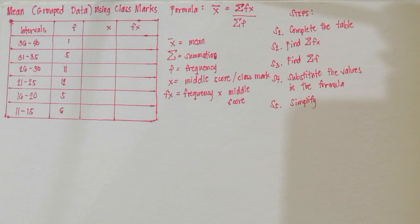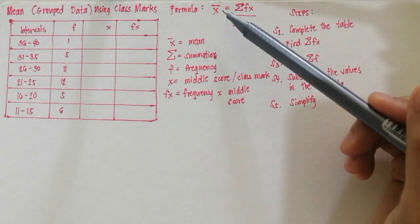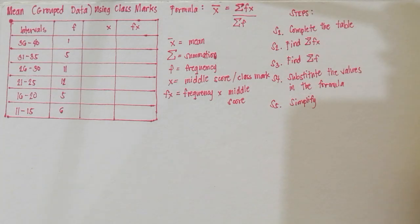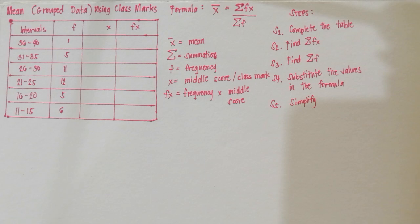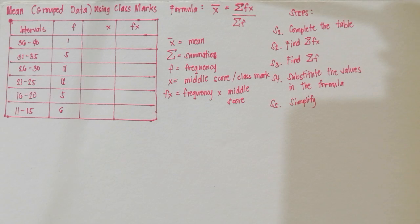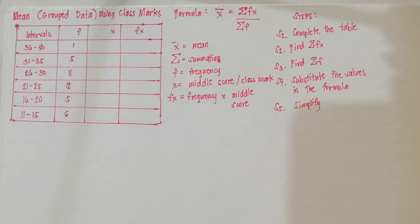If we are going to use the first way, we have here the formula. We have X-bar, which is the symbol for the mean. The next symbol, which looks like an E, is the summation — by the word itself, sum, we are just going to do addition. The letter F stands for the frequency. The X means middle score, or what we call the class mark. And FX means we are just going to multiply the frequency and the middle score. We read the formula as: mean is equal to the summation of FX divided by the summation of F.